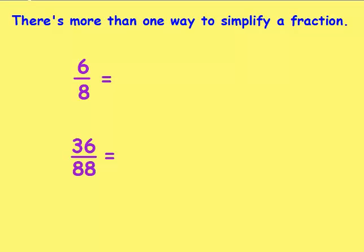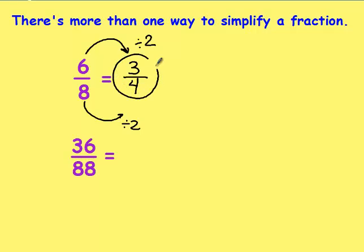And there's more than one way to simplify a fraction. The way that I see most people do it is that they look at this number, 6 eighths, and they try and find something that goes into both of them. And it's easy to see that they can both be divided by 2. 6 divided by 2 is 3, and 8 divided by 2 is 4. And then I can see that 3 fourths is simplified.